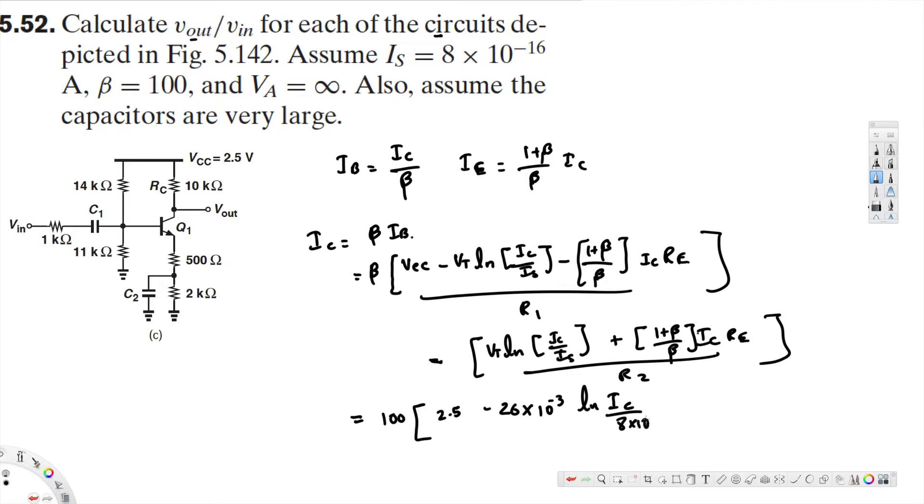8 times 10 to the power of minus 16, that's I_S given value, plus 1 plus beta, beta is given to be 100, 1 plus 100 over 100 times the emitter resistance. I_C is what we're trying to find and the emitter resistance here is...